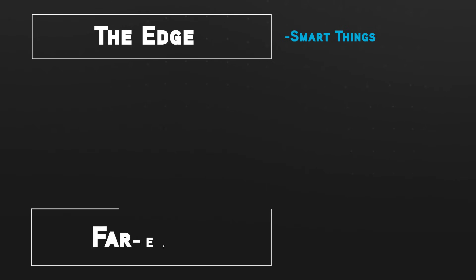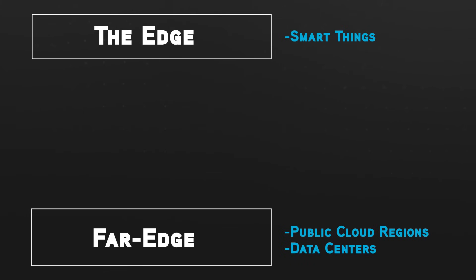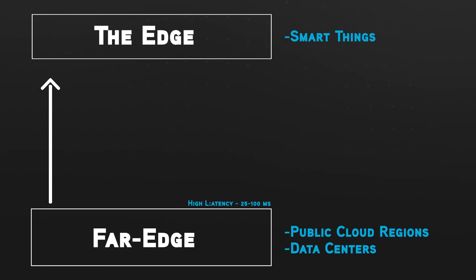The next type is known as the far edge. The far edge includes things like your public cloud regions and your data centers — large centers with large compute power. It's called the far edge because it is typically the farthest from these devices. This also tends to have the highest level of latency, roughly anywhere from 25 to 100 milliseconds round trip. These are rough estimates just to illustrate that the far edge tends to have high latency.